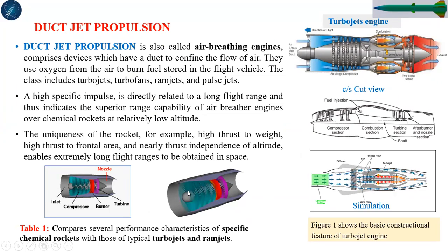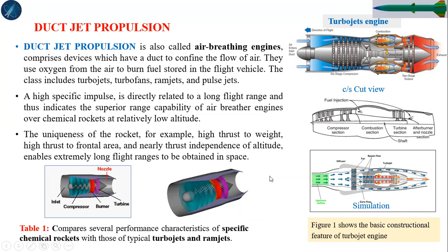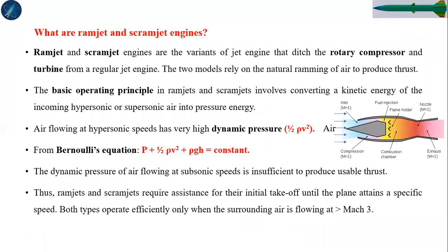We looked at ramjet and scramjet. The Bernoulli's equation is: static pressure plus dynamic pressure (half rho V squared) plus potential pressure (rho g h) equals stagnation pressure P₀. The key difference in ramjet and scramjet engines compared to other engines is that they have only a diffuser instead of a compressor — there is no turbine and no compressor, only a diffuser.